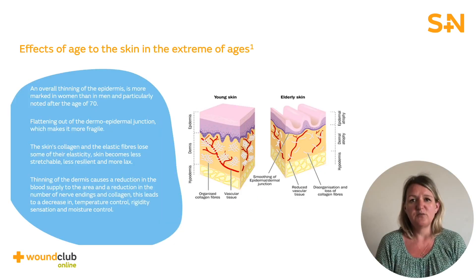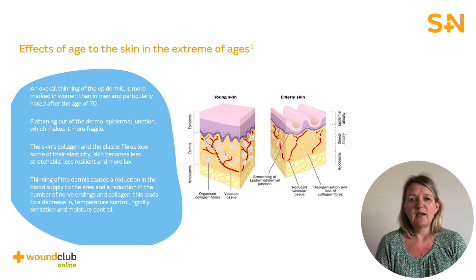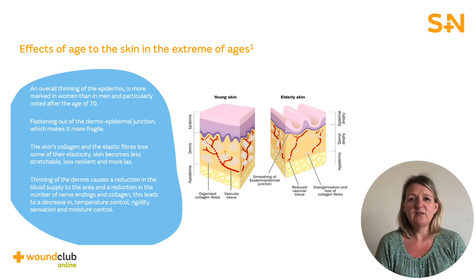The effects of aging on the skin present structural changes that result in an overall thinning of the epidermis. These changes are more marked in women than men, particularly for those over 70 years old. There is a flattening of the dermoepidermal junction which makes skin more fragile and more susceptible to shearing forces and damage such as skin tears. Changes also occur in the skin's collagen and elastic fibres, which lose some of their elasticity. Skin becomes less stretchable and less resilient, resulting in skin folds and wrinkles. Thinning of the dermis causes a reduction in blood supply, a reduction in the number of nerve endings and collagen, leading to a decrease in temperature and moisture control.